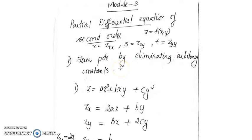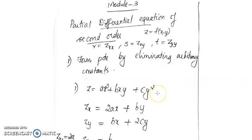We will see an example. First we will see how to form a PDE by eliminating arbitrary constants. We are given the function z = ax² + bxy + cy², where a, b, and c are arbitrary constants. We need to eliminate a, b, and c, and that will give us the PDE.